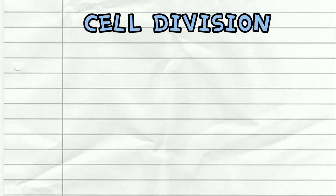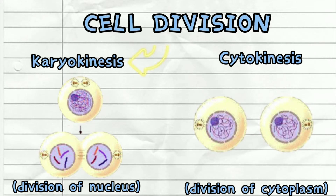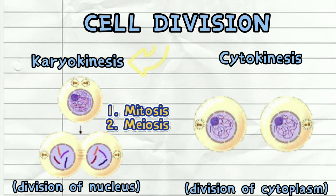The cell division process is divided into two stages: karyokinesis, the division of the nucleus, and cytokinesis, the division of the cytoplasm. This means when a cell divides, the nucleus divides first, followed by the cytoplasm. Our main focus in this video is the karyokinesis process, which is divided into mitosis and meiosis — technically the most important process in this chapter.